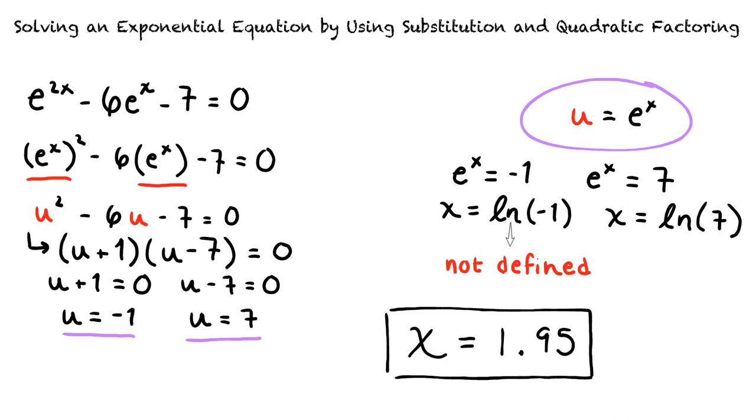Let me see if I understand all of this. To solve exponential equations by using substitution and quadratic factoring, we first make sure the exponential equation is in quadratic form. Next, we apply u substitution. Then, we factor the quadratic equation to solve for u. Finally, we undo the u substitution and solve for x. That all sounds correct. Great work!